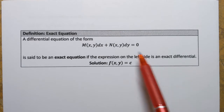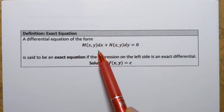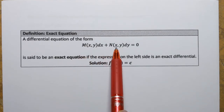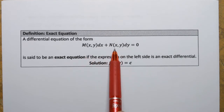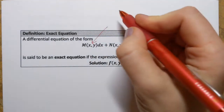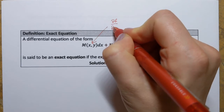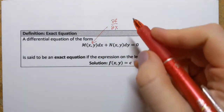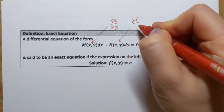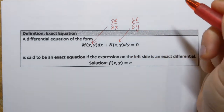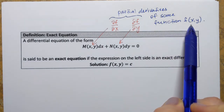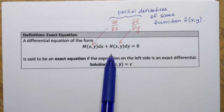So what is the exact differential? The left-hand side is called the exact differential if those two functions — M(x,y) and N(x,y) — are partial derivatives of some function f. So M(x,y) is the partial derivative of f with respect to x, and N(x,y) is the partial derivative of that same function f with respect to y. These two must be partial derivatives of some function f(x,y), and in this case we call this equation an exact differential equation.